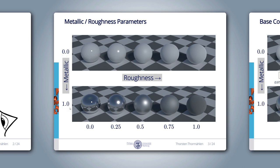However, in textures or mipmaps, the resolution is limited and we might have a mix of materials within a single pixel. In these situations, a fractional value for the metallic parameter makes perfect sense.